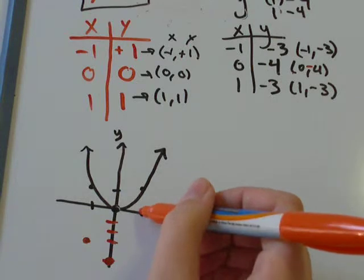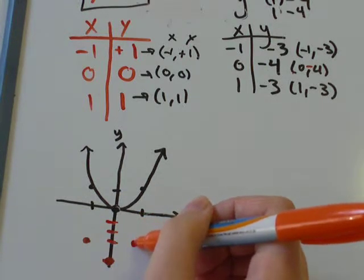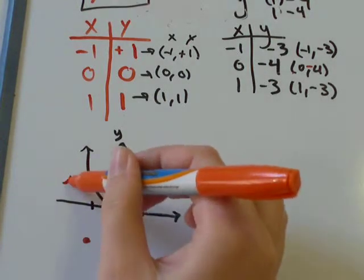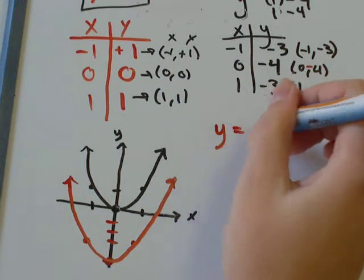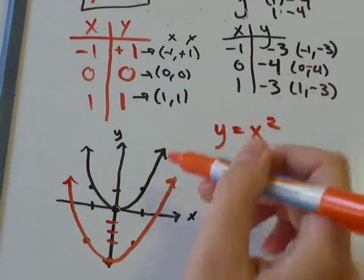And 1, negative 3, 1, negative 1, 2, 3. Okay. So, now we've got a parabola that lives down here. So, before we had y equals x squared. That's the black graph, this one.